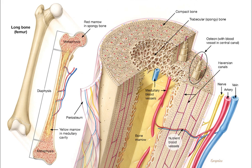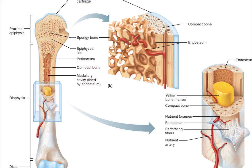To begin, a bone is a rigid organ that constitutes part of the skeleton in most vertebrate animals. Bones protect the various other organs of the body, produce red and white blood cells, store minerals, provide structure and support for the body, and enable mobility.